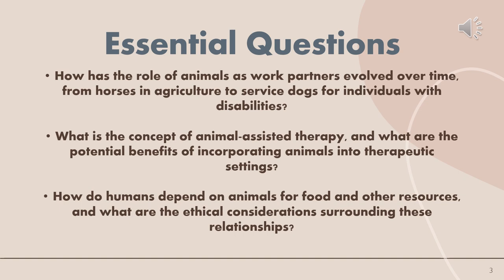For example: how has the role of animals as work partners evolved over time, from horses in agriculture to service dogs for individuals with disabilities? What is the concept of animal-assisted therapy and what are the potential benefits of incorporating animals into therapeutic settings? And how do humans depend on animals for food and other resources, and what are the ethical considerations surrounding these relationships?